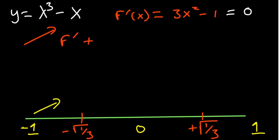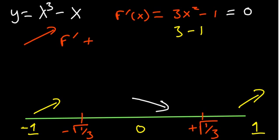For the region in between, we plug in zero: the 3x squared term is eliminated and we're left with negative one, so the first derivative is negative — meaning the function is decreasing there. For the rightmost region, plugging in one gives 3 minus 1, which is positive — so that part is increasing. We've now observed the behavior of the curve using the first derivative.